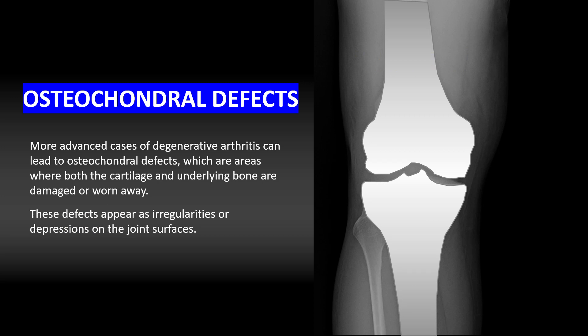More advanced cases of degenerative arthritis can lead to osteochondral defects, which are areas where both the cartilage and the underlying bone are damaged or worn away. These defects appear as irregularities or depressions in the joint surfaces. You can also have a chunk of cartilage and bone break off and float around in the joint.